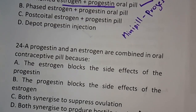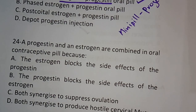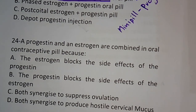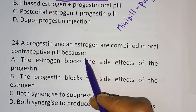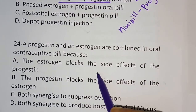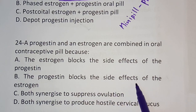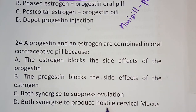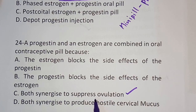Question number 24: A progestin and estrogen are combined in oral contraceptive pills because — options: the estrogen blocks the side effects of progestin, the progestin blocks the side effects of estrogen, both synergize to suppress ovulation, both synergize to produce hostile cervical mucus. The correct answer is option C — they synergize to suppress ovulation.